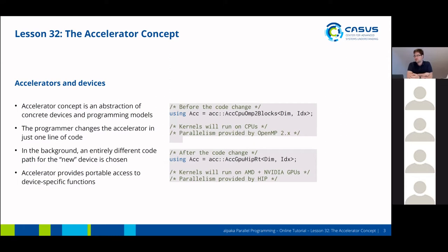The programmer just changes the accelerator in one line of code. For example, if you choose an OpenMP accelerator, all the following device-side operations will run on CPUs and the inherent parallelism is provided by OpenMP. If you choose the HIP accelerator, the kernels will run on both AMD and NVIDIA GPUs and the actual parallelism is provided by HIP. This means that just by changing one line of code, there is an entirely different code path for the new device chosen in the background.